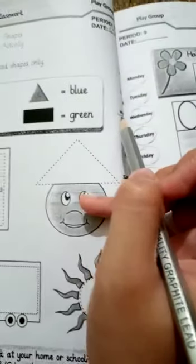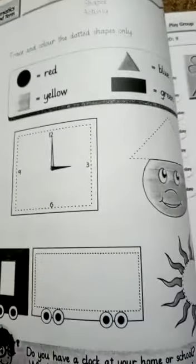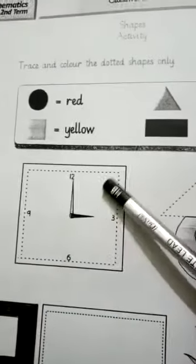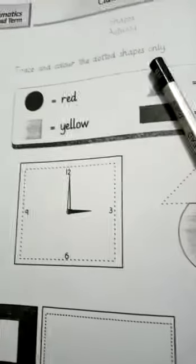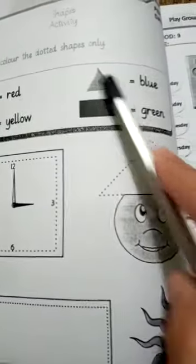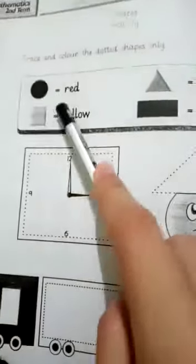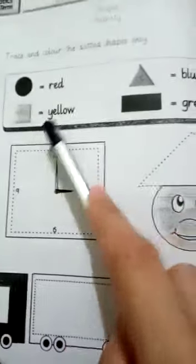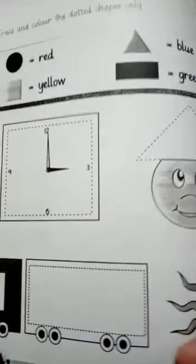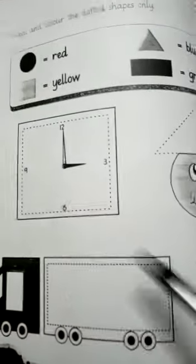Tick the correct one. Today our topic is shape activity. Trace and color the dotted shapes only. Circle we have red color, this triangle we have blue color, this square we have yellow color, this rectangular we have green color.